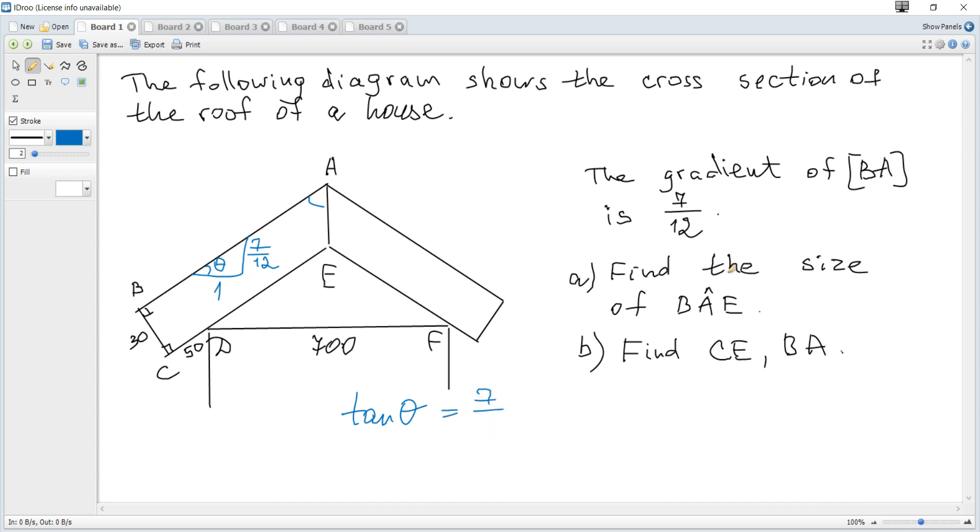In general, gradient is rise over run, or y2 minus y1 over x2 minus x1 for any two points on the line. It means that for any two points there will always be the same ratio of changing y to changing x. Here it's 7 to 12. In parts it may be 70 to 150 and so on. So we can deduce that tangent of this angle theta is 7 over 12.